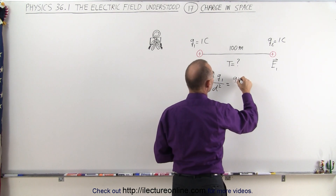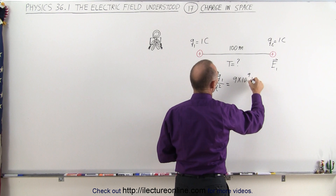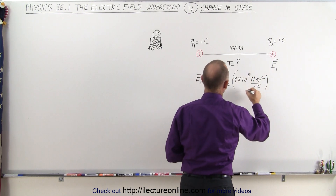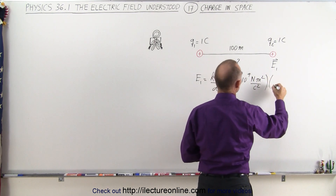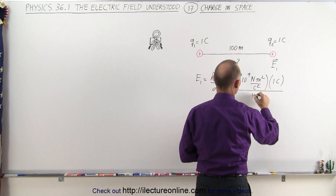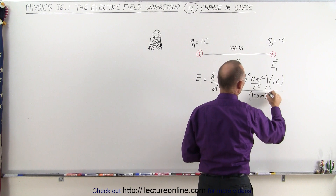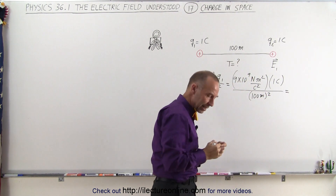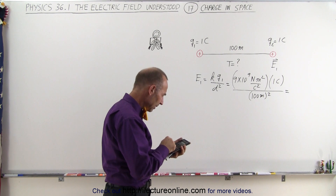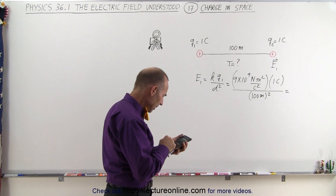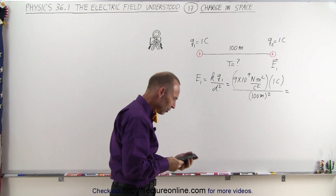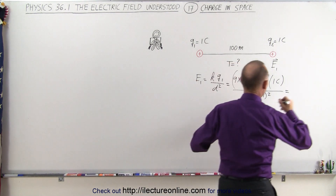So in this case that would be 9 times 10 to the 9th Newton meters squared per Coulomb squared, multiplied times Q1 which is 1 Coulomb, all divided by the distance which is 100 meters, quantity squared. So the electric field at that location would be 9×10⁹ divided by 100 squared, which is 9×10⁵ or 900,000 Newtons per Coulomb.